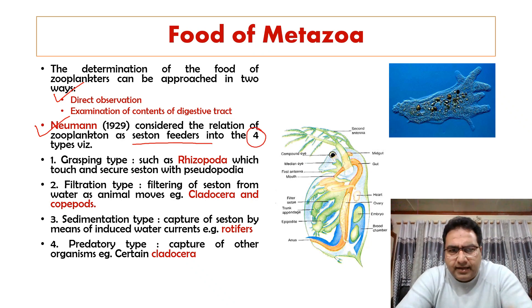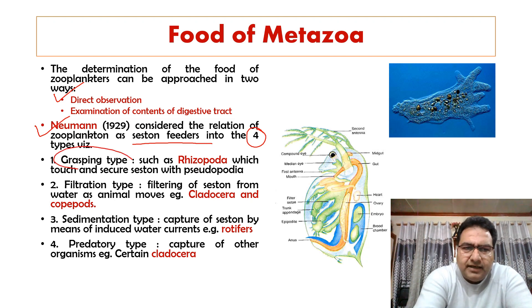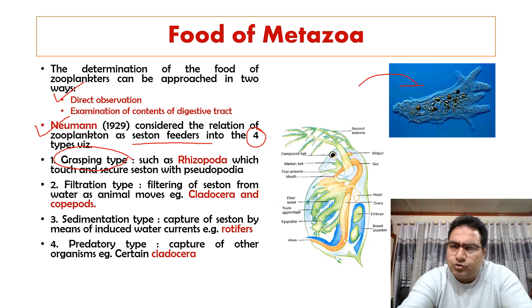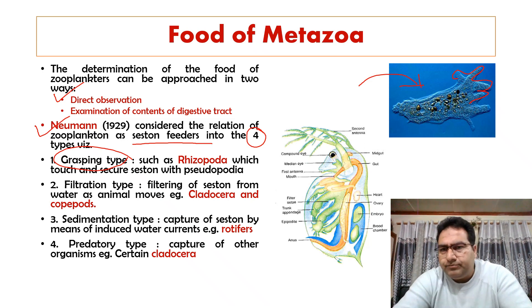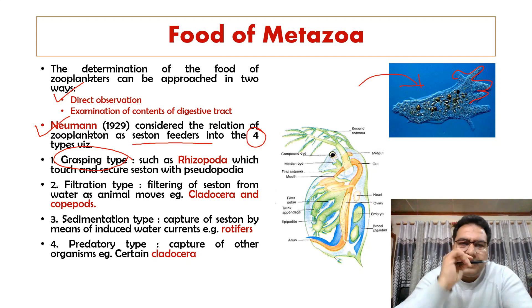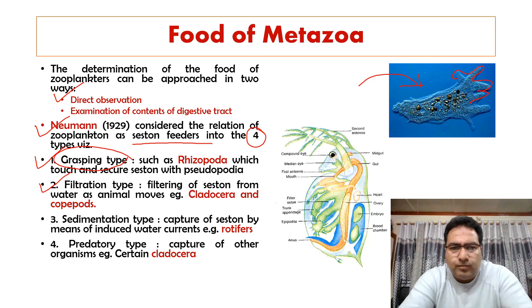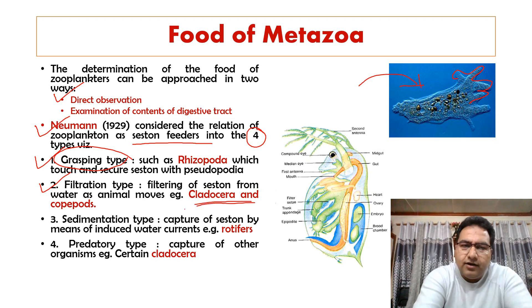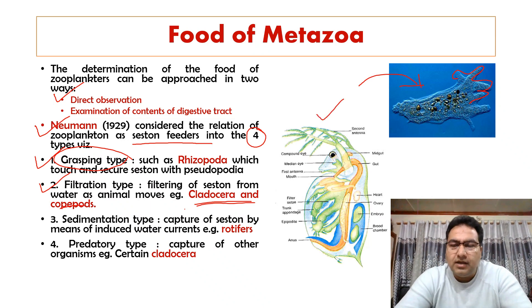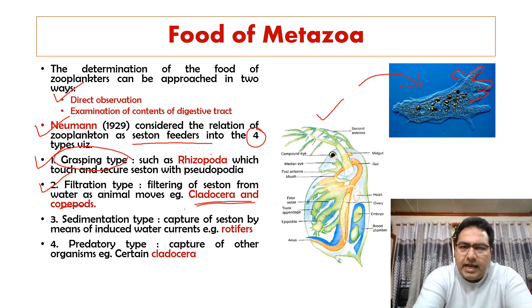Zooplankton can be divided into four feeding types. The first is the grasping type, like Rhizopoda, which use pseudopodia to touch, secure, and engulf food. The second is the filtration type, shown by Cladocera and copepods, where food is filtered from the water as the animal moves — for example, Daphnia and Cyclops.